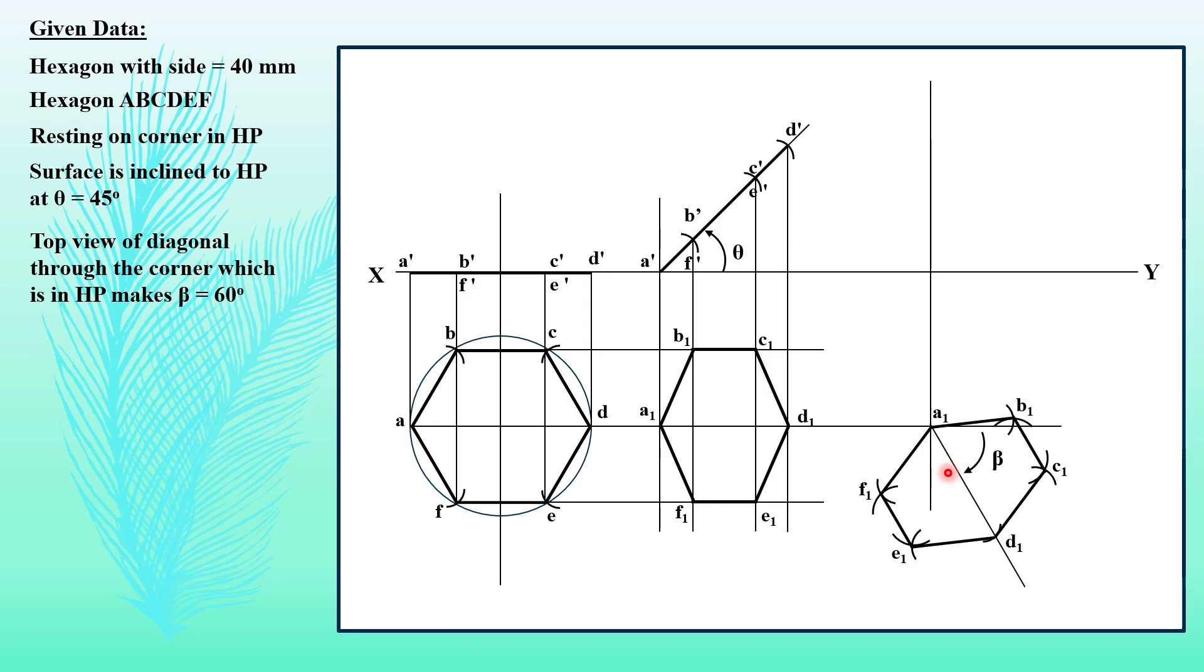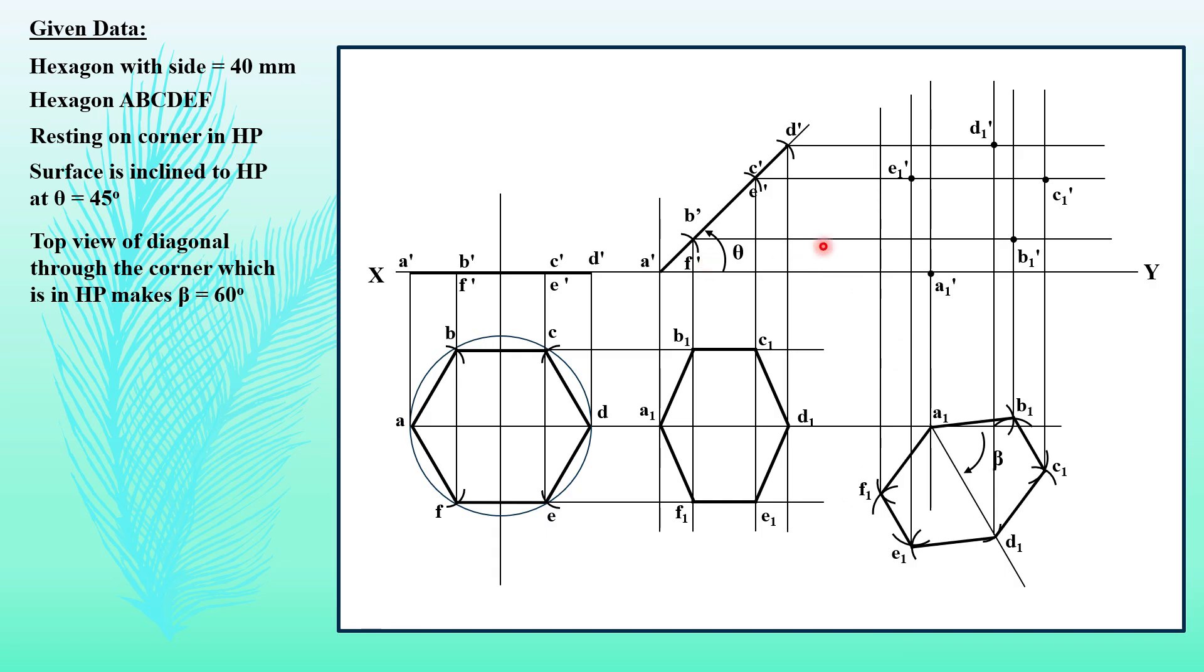Now, taking the projectors up as we already have the projector of A, this is the intersection point A1 dash. Similarly, taking B up from here it is on this line, so this is another point B1 dash. Similarly, this is projector for C. From here this is the intersection C1 dash. Then D is on the last, D1 dash. Then E, it is on the same line here of C, so it is E1 dash. Last is F. Here it is from the same line on B1 dash, so this is the last point. Join them.